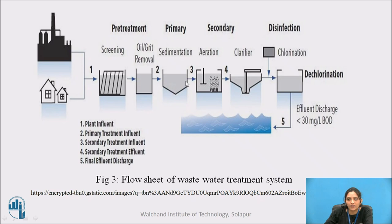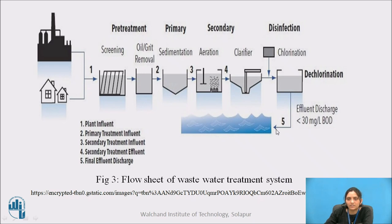Before aeration, there is a primary treatment called sedimentation, and after aeration, there is a secondary treatment called clarification. The sludge obtained from the primary treatment is called primary sludge, and the sludge from the secondary treatment is called secondary sludge. After clarification, there is a treatment called chlorination. Chlorination is the addition of chlorine to water to avoid the spread of waterborne disease. After chlorination, water is treated up to a drinkable level.